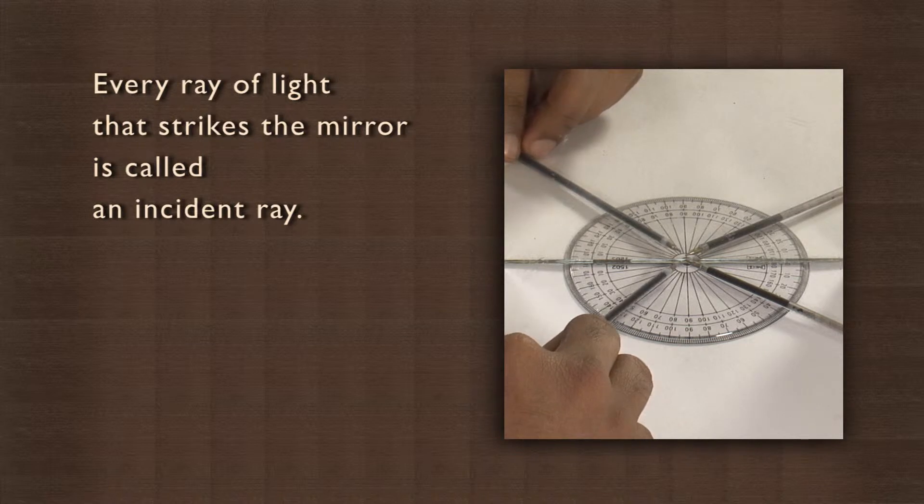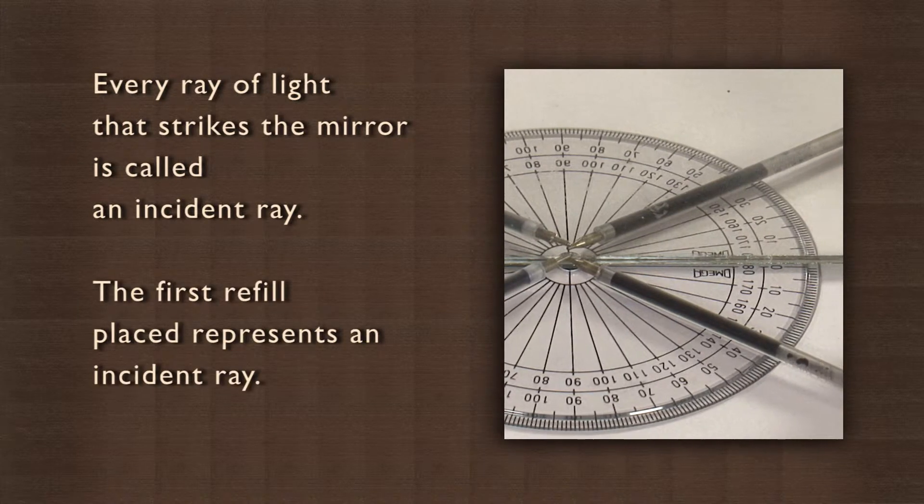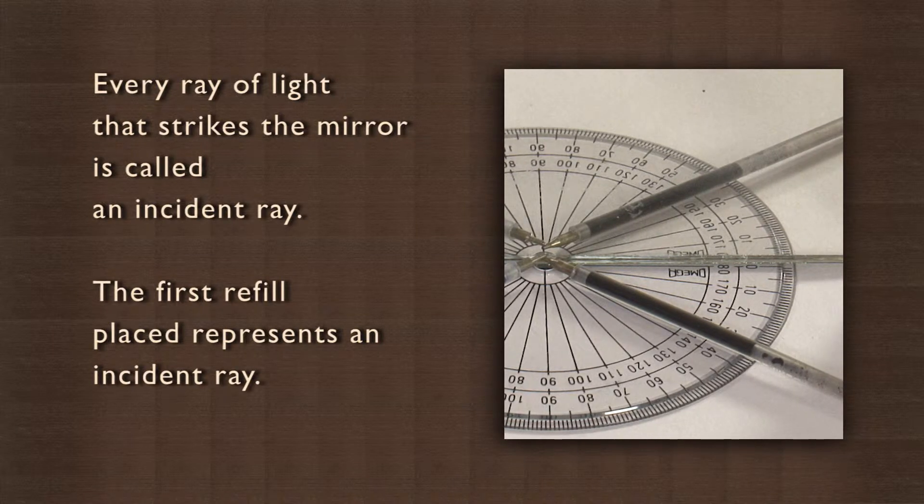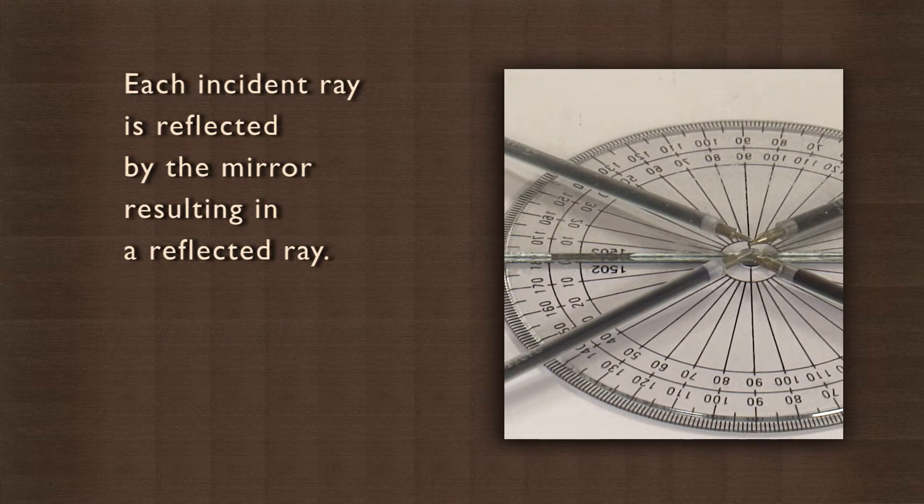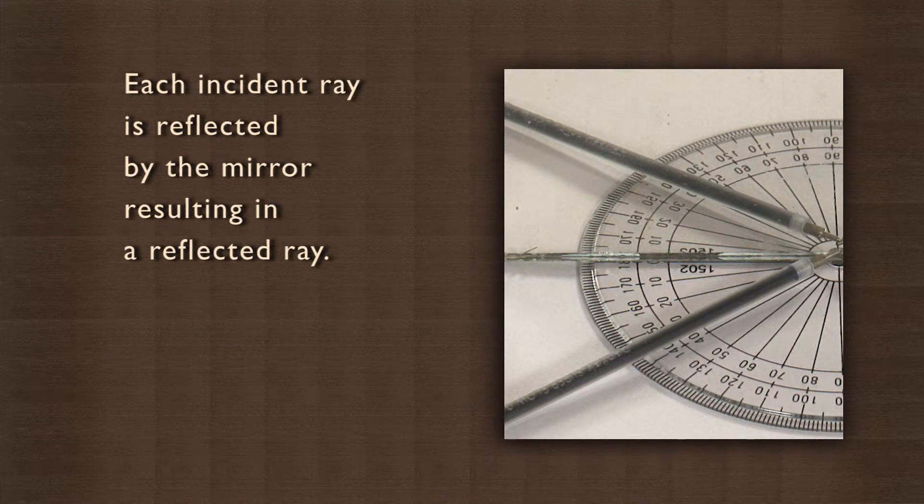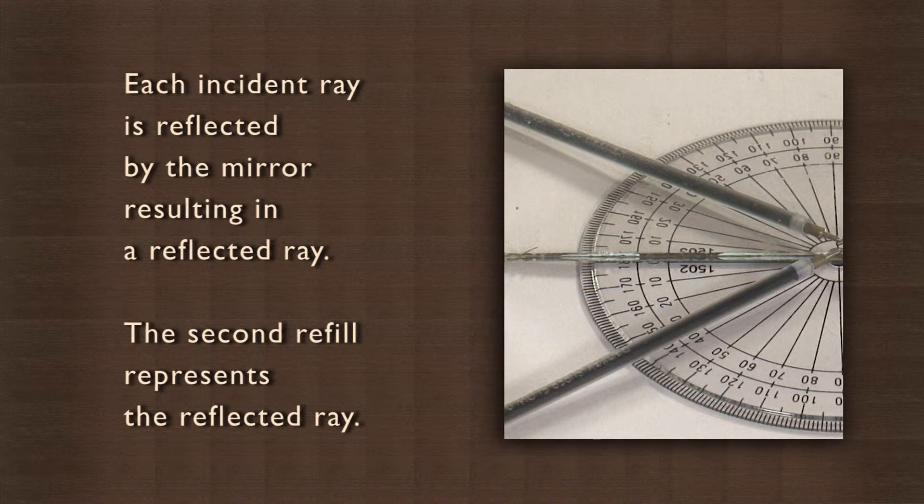Every ray of light that strikes a mirror is called an incident ray. In the experiment just performed, the first refill placed represents an incident ray. Each incident ray is reflected by the mirror resulting in a reflected ray. The second refill represents the reflected ray.